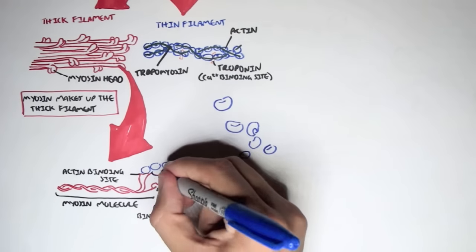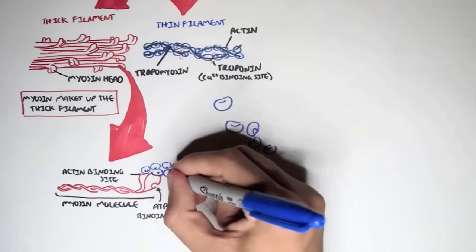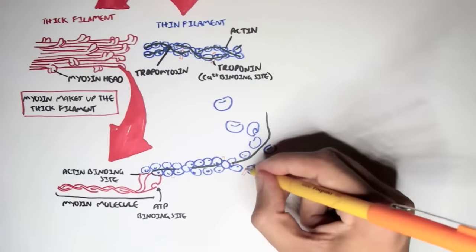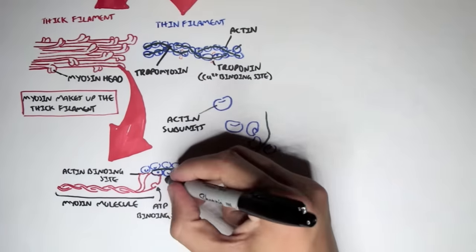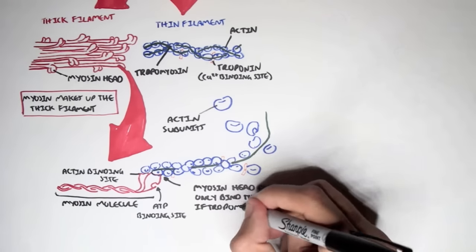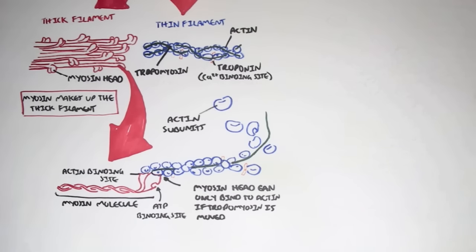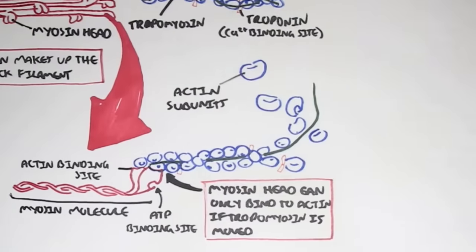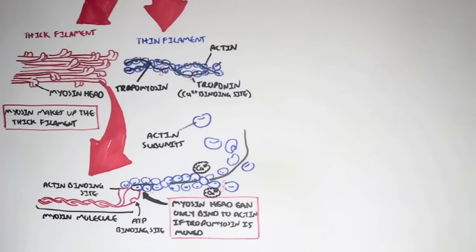Here we have the thin filament made out of actin subunits. An important note is that myosin heads can only bind to actin subunits if tropomyosin is moved. Tropomyosin has moved here because calcium binds onto the orange structure — the troponin.